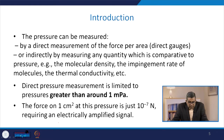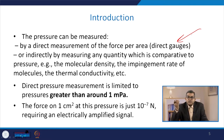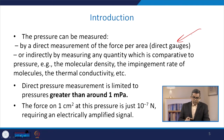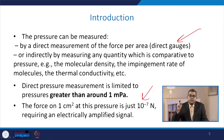Pressure can be measured either by direct measurement of force per area (a direct gauge) or indirectly by measuring any quantity comparative to pressure, such as molecular density, impingement rate of molecules, or thermal conductivity. Direct pressure measurement is limited to pressures greater than around 1 milliPascal; the force on 1 square centimetre at this pressure is just 10⁻⁷ Newton, requiring an electrically amplified signal.